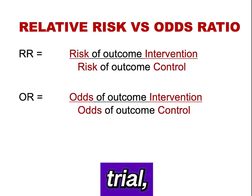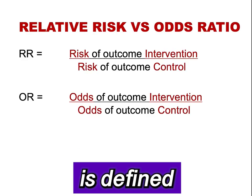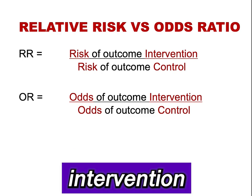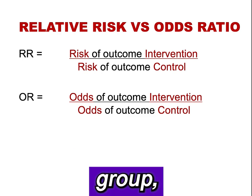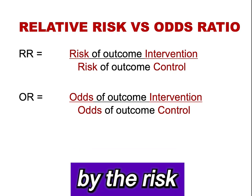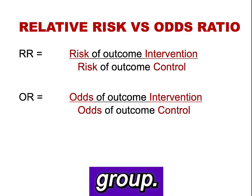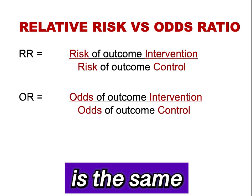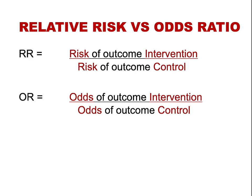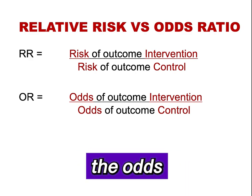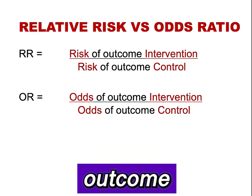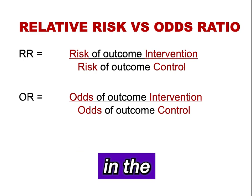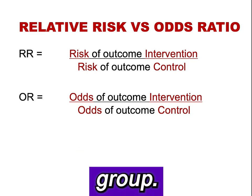In a clinical trial, relative risk is defined by convention as the risk of the outcome in the intervention group divided by the risk of the outcome in the control group. The syntax is the same for an odds ratio: an odds ratio is the odds of the outcome in the intervention group divided by the odds of the outcome in the control group.